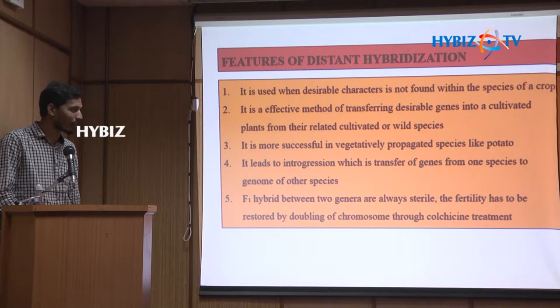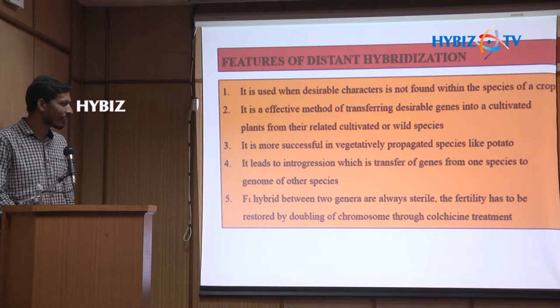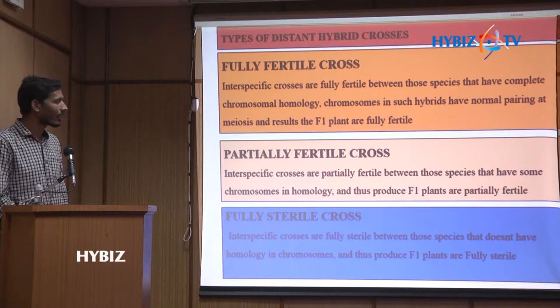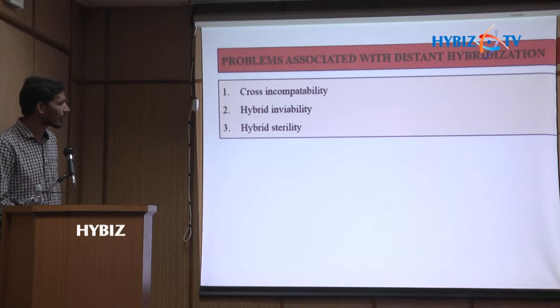If a hybrid between two genera is always sterile, fertility has to be restored by doubling the chromosomes with colchicine treatment. In distant crosses, when we cross different types of species, we get different types of crosses — it may be a fertile cross, a partially fertile cross, or a fully sterile cross.